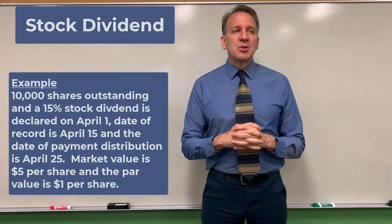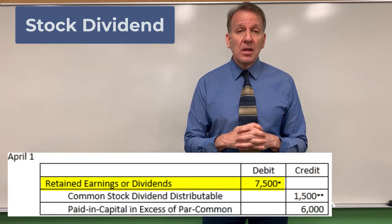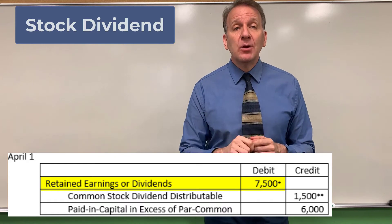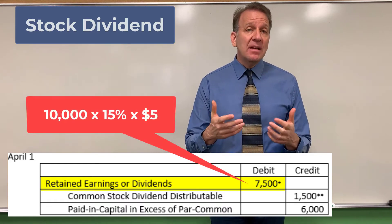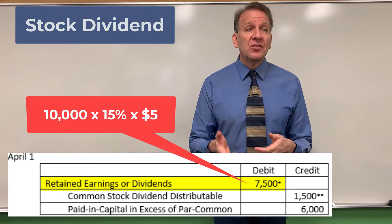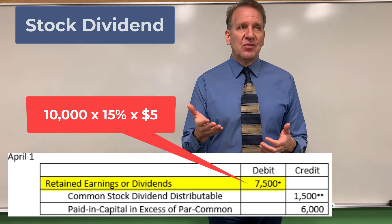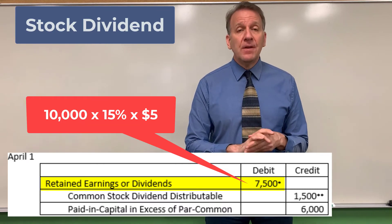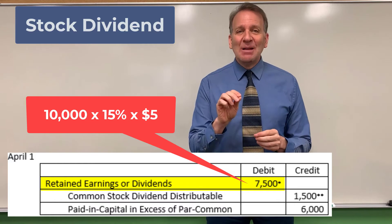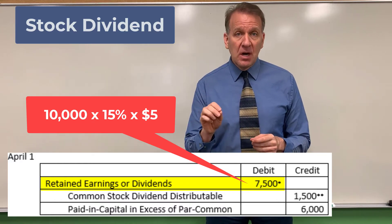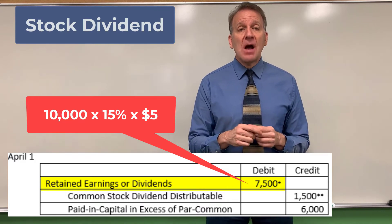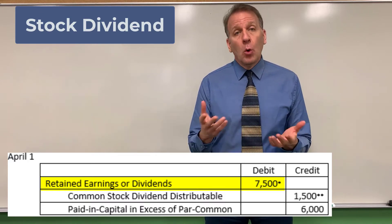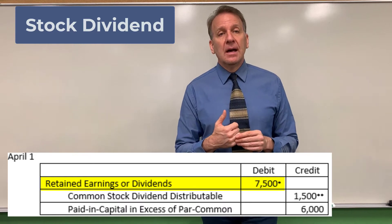Here's our journal entry: we debit retained earnings or dividends, very similar to our cash dividend entry. We take the $5 market value and multiply by the number of shares in this dividend. The number of shares is 10,000 times 15%, which is 1,500 shares. So 1,500 shares times $5 market value equals $7,500 — that's the total amount for our journal entry.